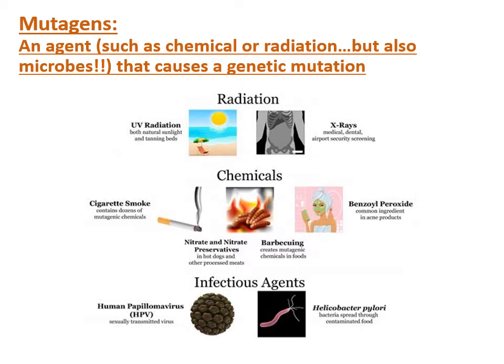The last thing I want to mention for mutations is the term mutagens. Anytime something is a mutagen, it means it can cause a genetic mutation. These agents can be chemical or radiation, as most people think of, but they can also be microbes — such as HPV, H. pylori, and even the Epstein-Barr virus, which most people think of as causing mono. All of these have been found to be mutagens, meaning they cause genetic mutations and thus can cause cancer.